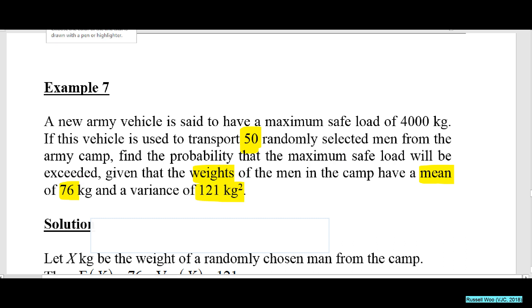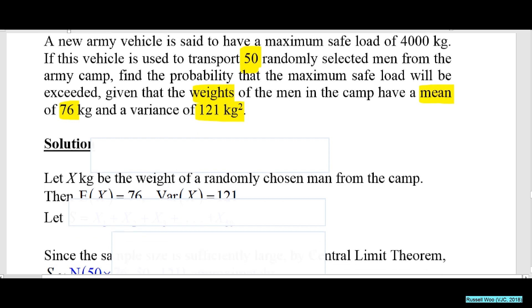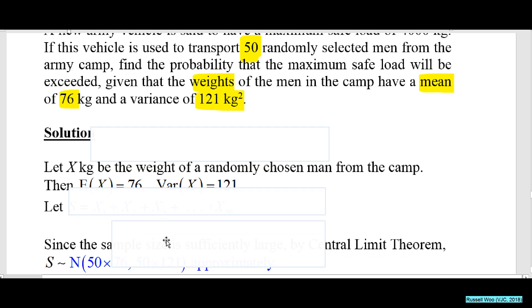One man's weight has mean 76 and variance 1.21.